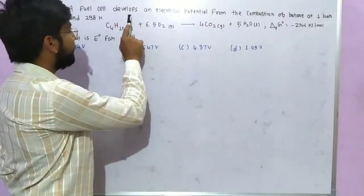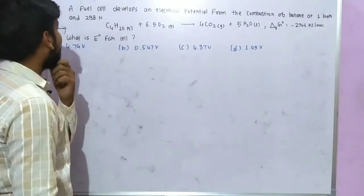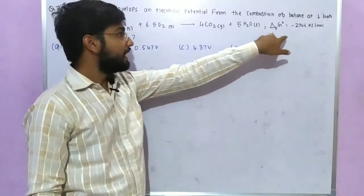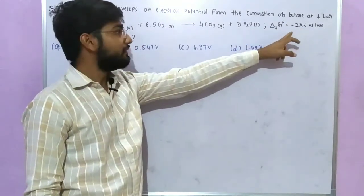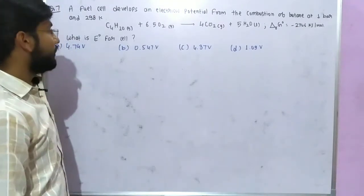Here is the question. A fuel cell develops an electrical potential from the combustion of butane at 1 bar and 298 Kelvin. This is the complete cell reaction, and this is the delta G knot for the reaction. The question is, what is the E knot for a cell?